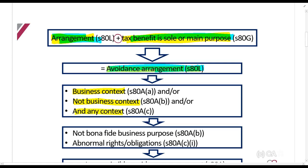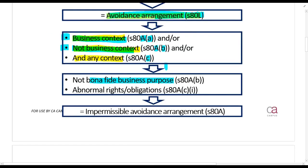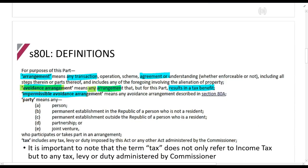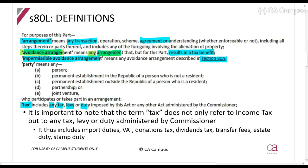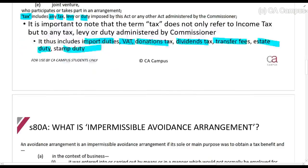Section 80A applies for businesses, Section 80B applies if it's not a business context, and Section 80C applies to both business and non-business — so all contexts. If it is found that there's no bona fide business purpose for the arrangement, or that it creates abnormal rights and obligations, then it is called an impermissible avoidance arrangement. The word 'tax' includes any tax, levy or duty — including import duties, dividends tax, transfer fees, estate duty, stamp duty — anything.